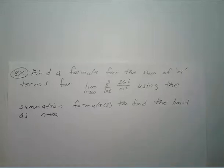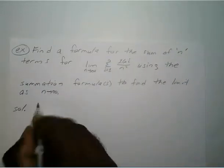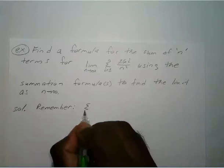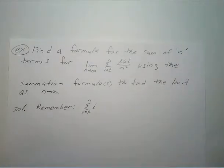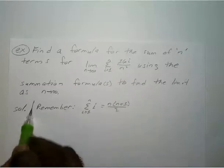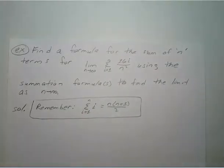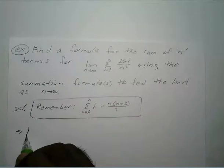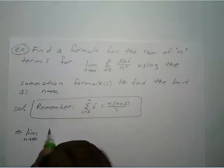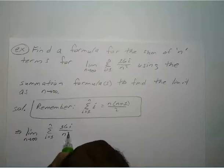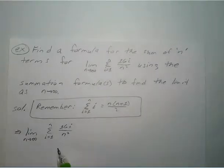All right, so to solve this one, you want to remember that the sum from i equals 1 to n of just i is equal to n times n plus 1 divided by 2. So we're going to write down our original problem: the limit as n approaches infinity of the sum from i equals 1 to n of 16i over n squared.